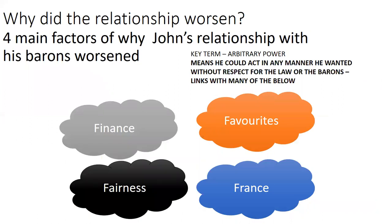These are the four F's — the four factors why John's relationship with the barons got worse: Finance, Favourites, Fairness, and France. One key term you need to know is arbitrary power. Two years ago this came up, and the biggest mistake people made was just listing the four F's without recognising that examples of arbitrary power appear in all four of them. Arbitrary power means John could act in any manner he wanted without respect for the law or the barons — basically, John acts in a selfish manner.